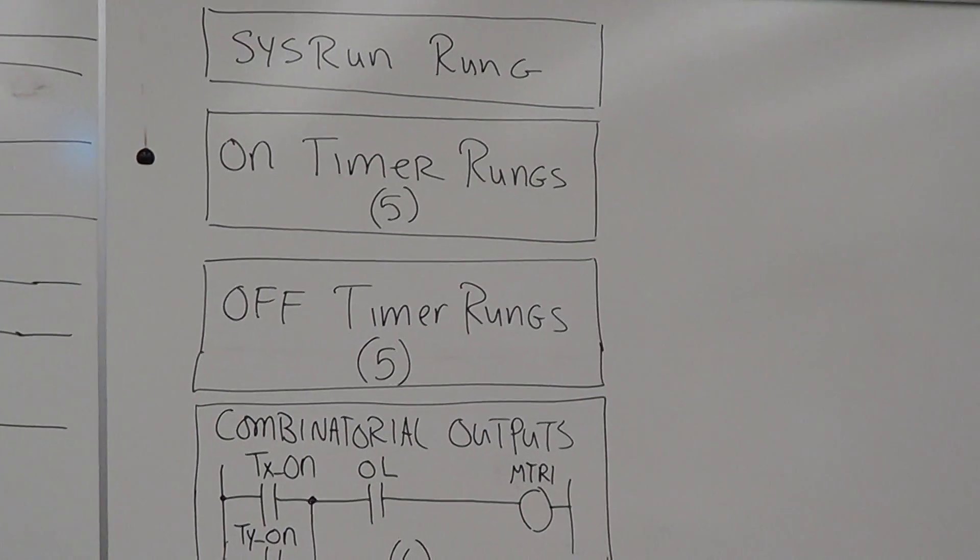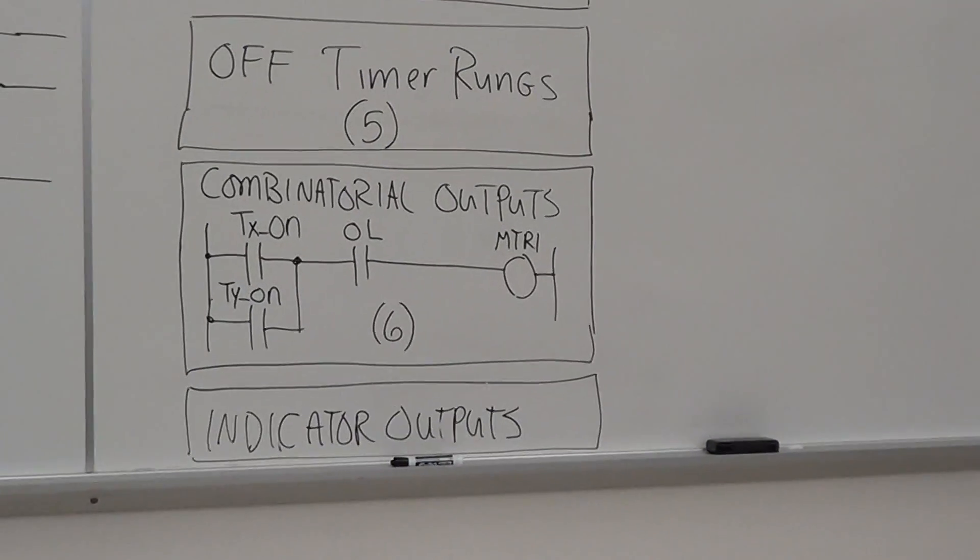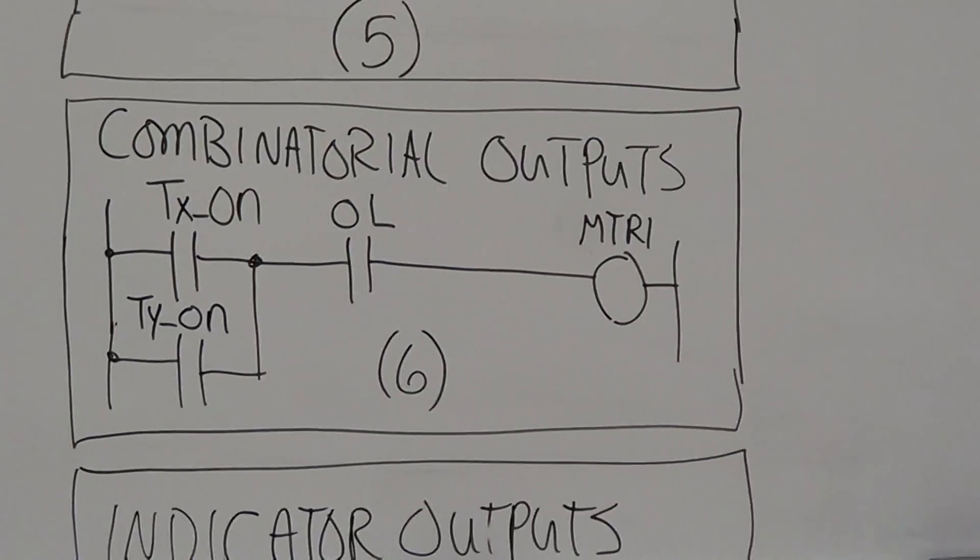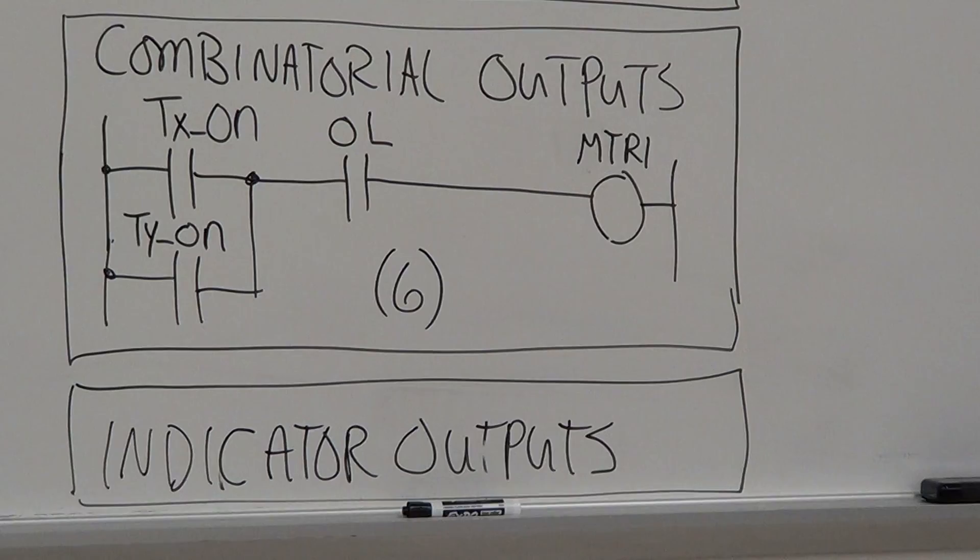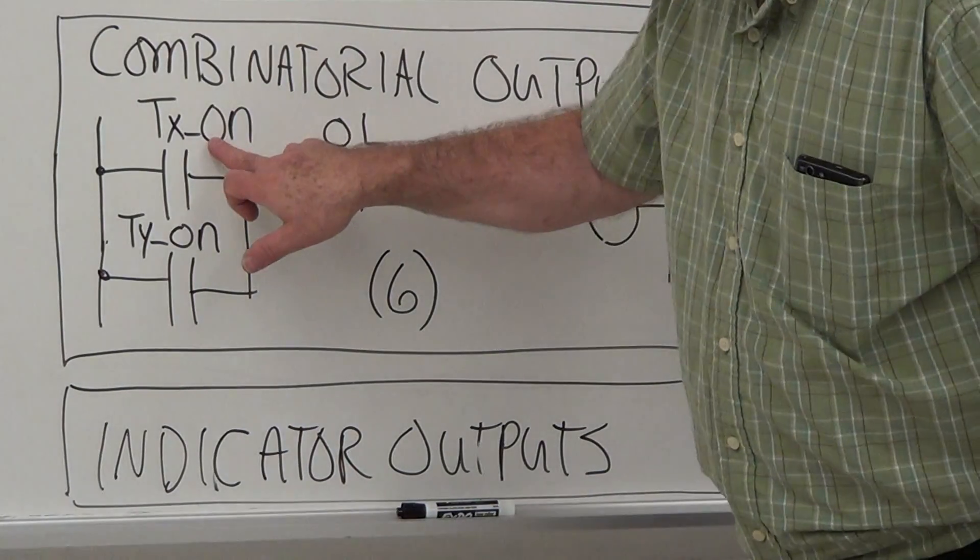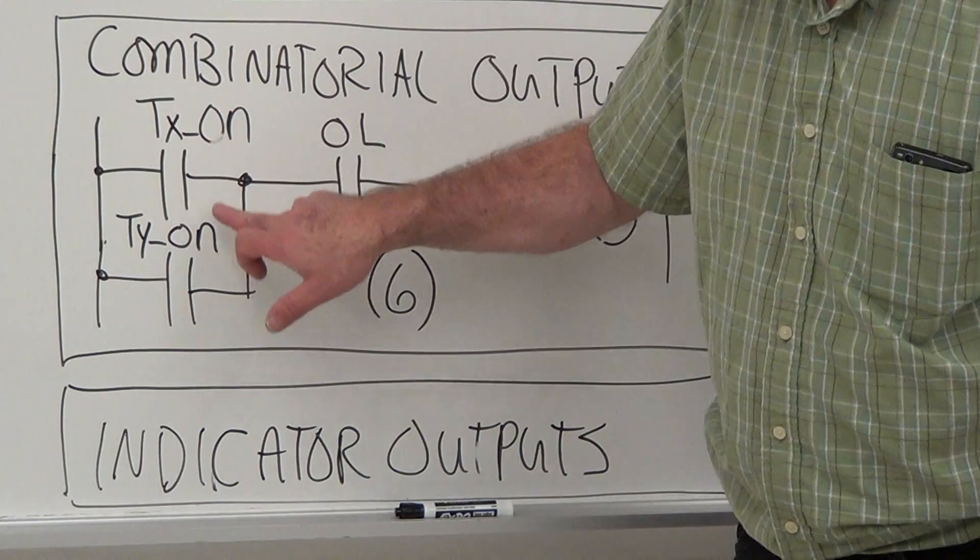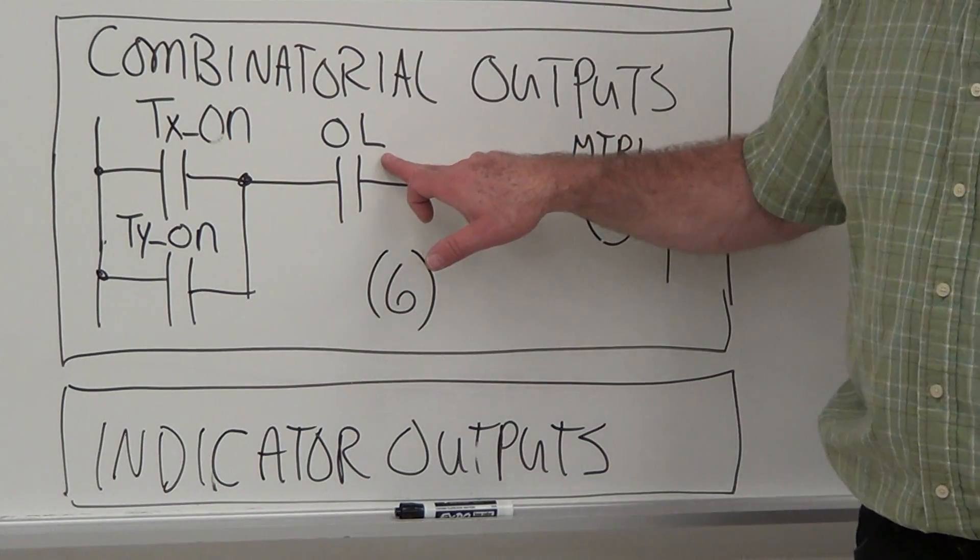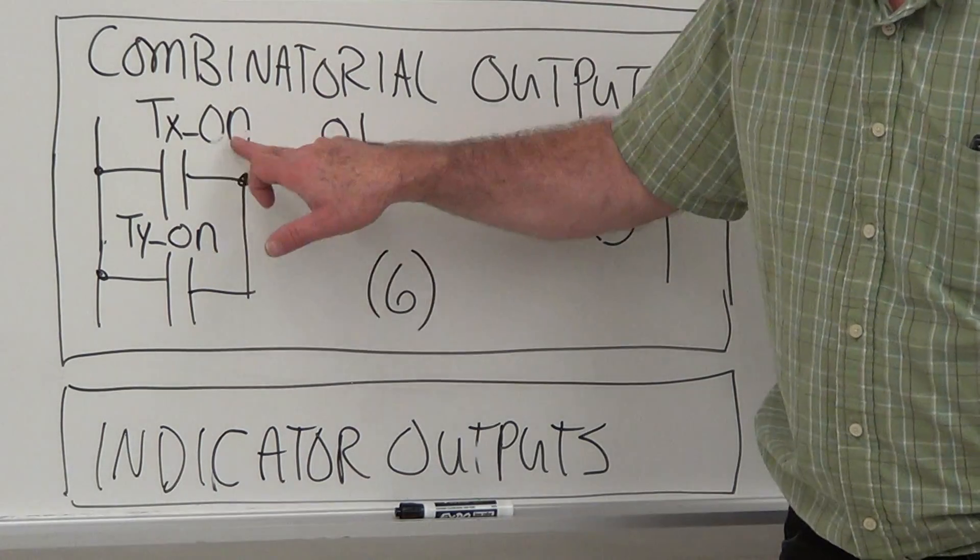We've got our combinatorial output rungs. You're going to take an output from one timer and an output from an off-delay timer, so your on-delay timer and off-delay timer. You've got your overload that'll turn on your motor output, and you keep going through this.